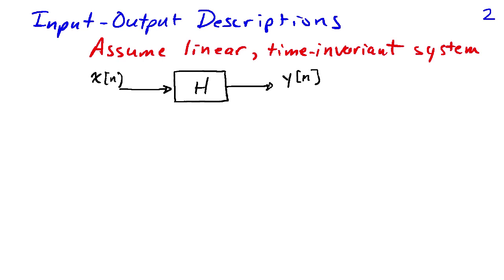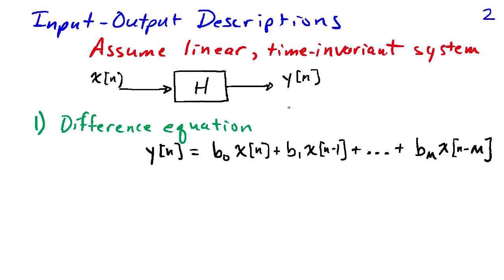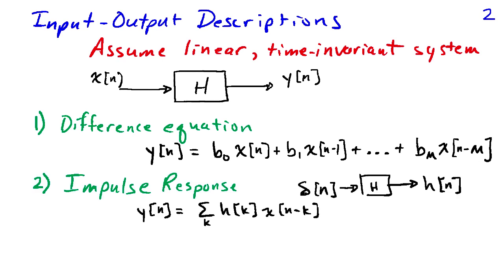We'll assume that we're dealing with linear time-invariant systems. In that case, we have an input x of n and an output y of n, and there are several different ways we can relate the input to the output. Using a difference equation, we can write the output y of n as a sum of coefficients b0, b1 through bm times past values of the input x of n, x of n minus 1, through x of n minus m. If we find the impulse response of the system, which we can do by applying an impulse and measuring what comes out, then we can relate the input to the output using the impulse response and convolution, written as a sum over k of h of k times x of n minus k.